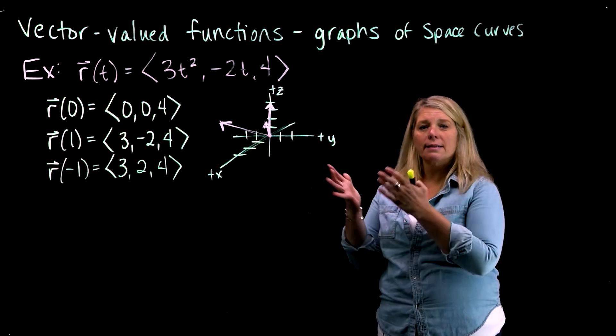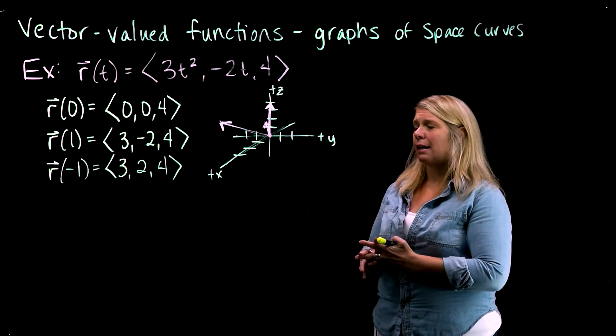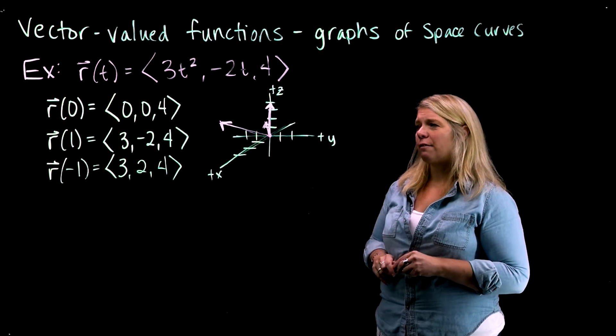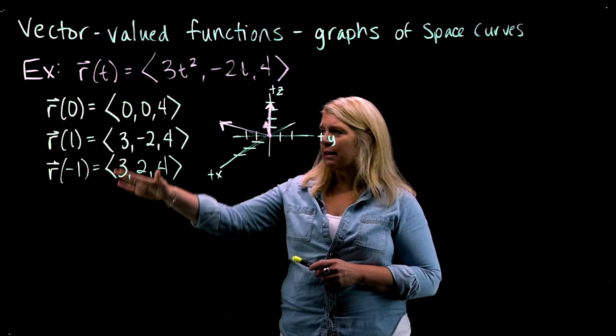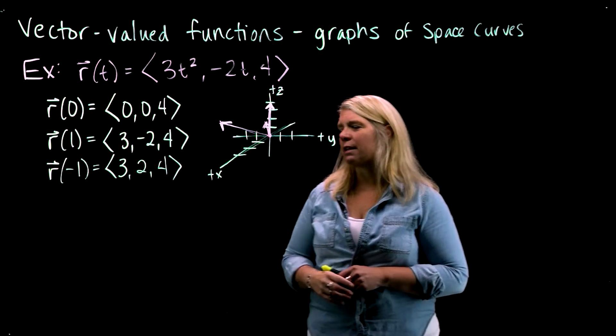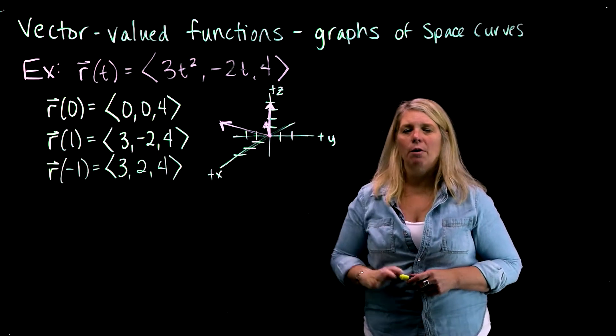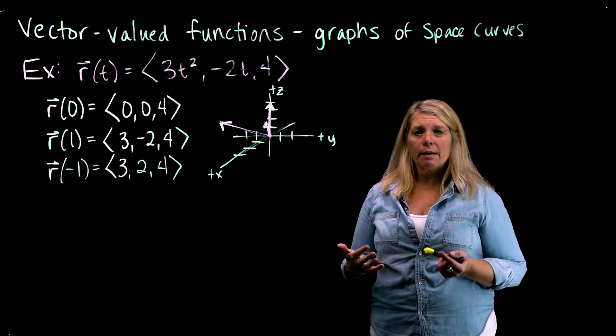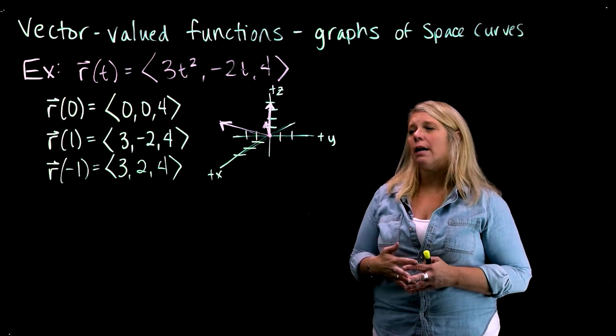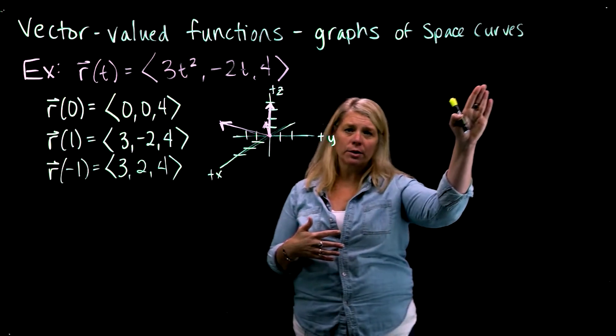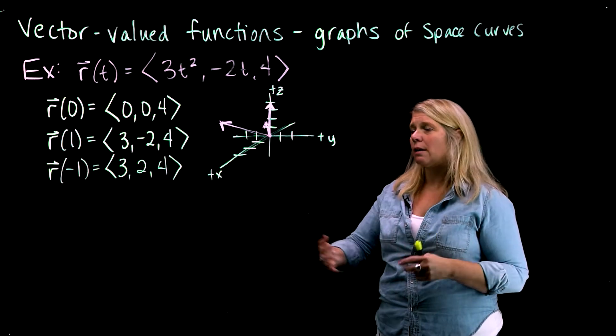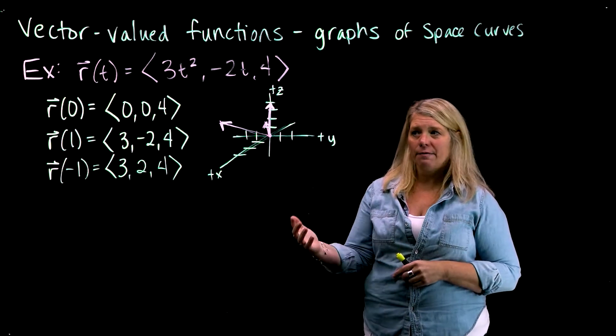All right, we're going to look some more at this example that we looked at previously. So we had a vector-valued function, and I plugged in a couple of t-values, three different t-values here. We got out some output vectors, and we plotted those output vectors. What we want to talk about in this video is what is called a space curve that is associated with or generated by this vector-valued function.